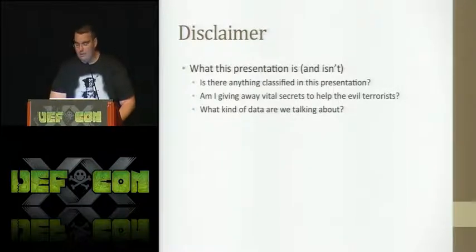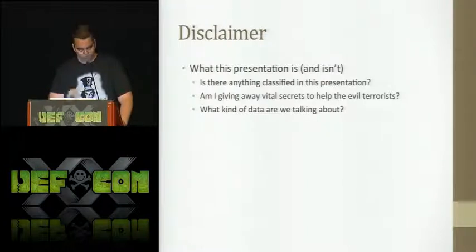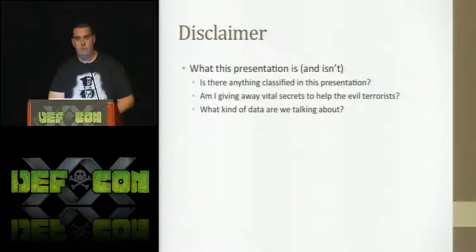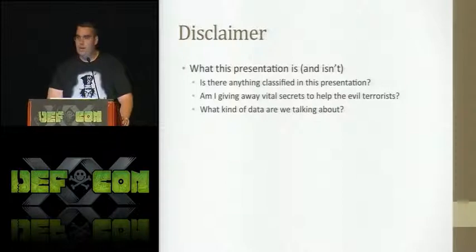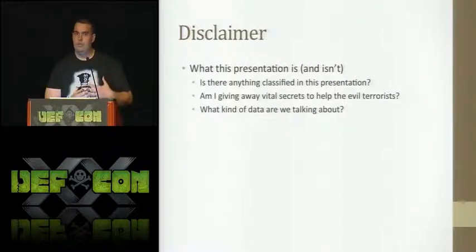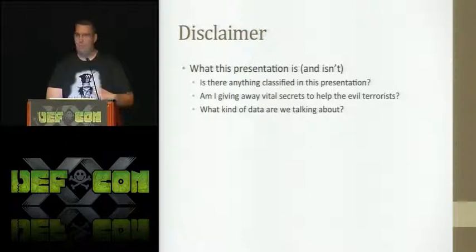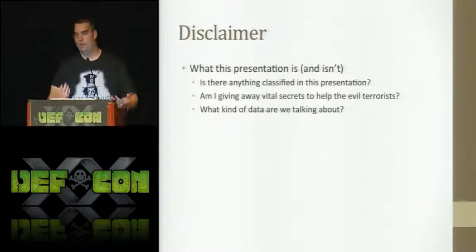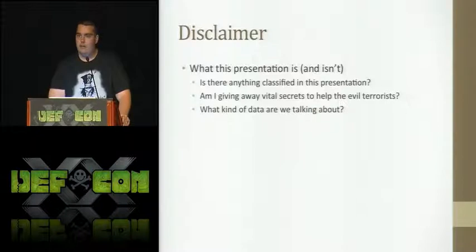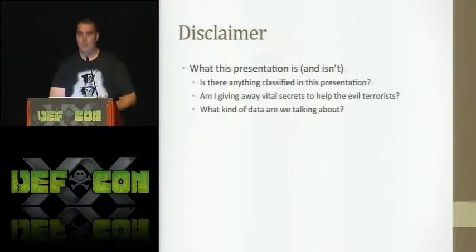I'm also not giving any vital secrets to help the evil terrorists. The data we're talking about is purely collateral classified information. In the classified world, there are three different types of classified information: collateral — which is basic confidential, secret, and top secret — there's also information called SAP, which is a special access program. That's like things like the stealth fighter program — things so super secret that only a small number of people know about them, sometimes exempt from even congressional oversight. So not even Congress knows what these defense contractors are working on. The last type is SCI — special compartmentalized information — mainly intelligence information under the oversight of the DNI.